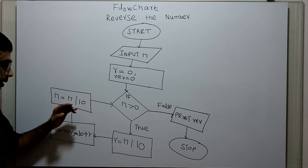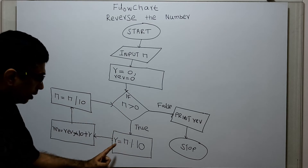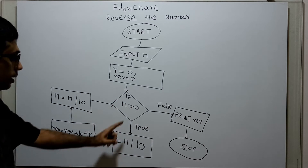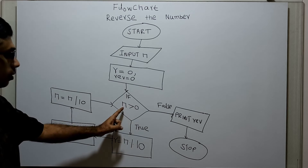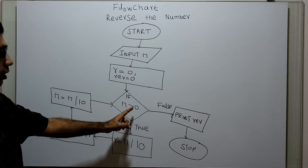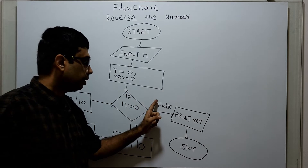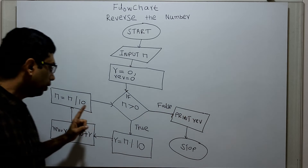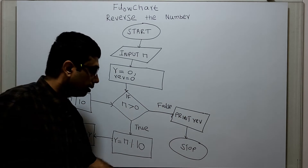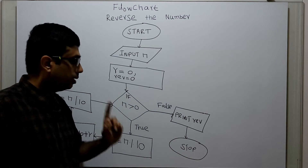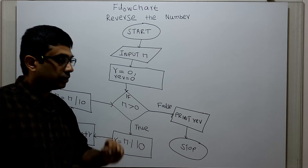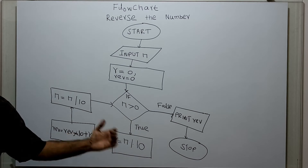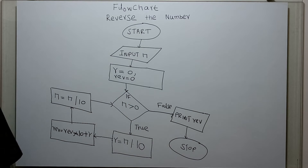The fractional part will get omitted. This loop will iterate until n greater than 0 is true. Once n greater than 0 is false, I will print the value in the variable REV and end the flowchart. Now we will take an example and check how this flowchart works.